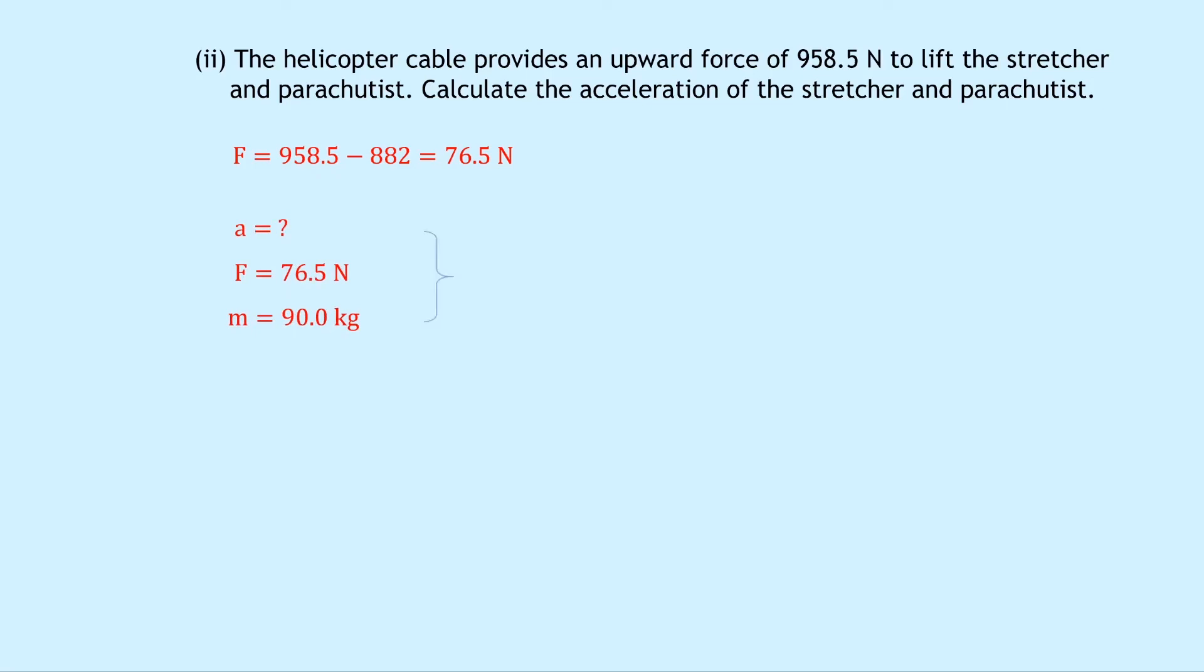We then write down Newton's second law, so we have F equals ma. We can rearrange for a this time, so we have a equals F over m. Substituting in the numbers, we have 76.5 divided by 90.0, which is going to give us an answer less than 1. So putting that into your calculator equals 0.85 meters per second squared.